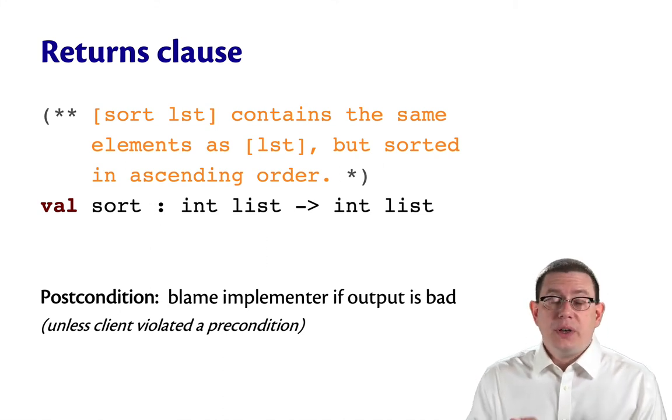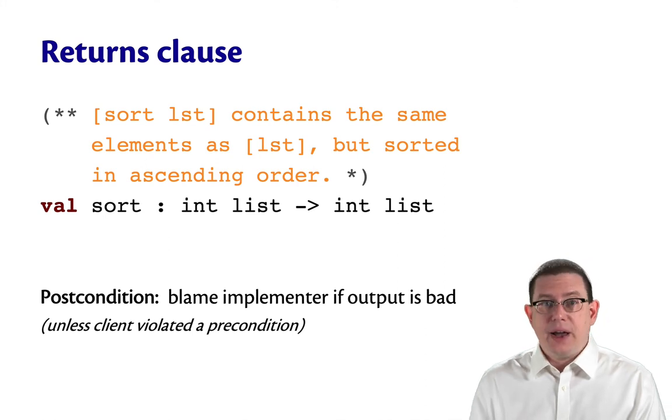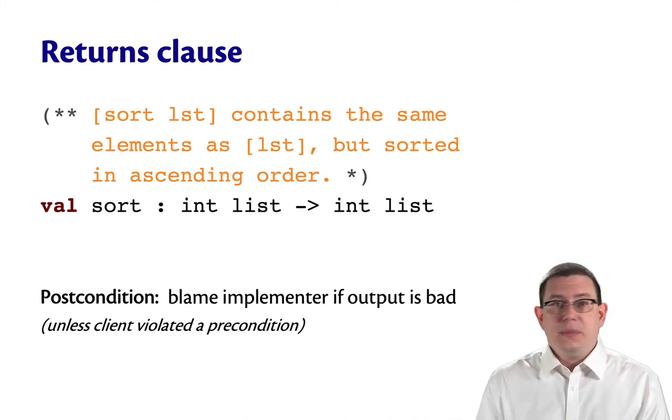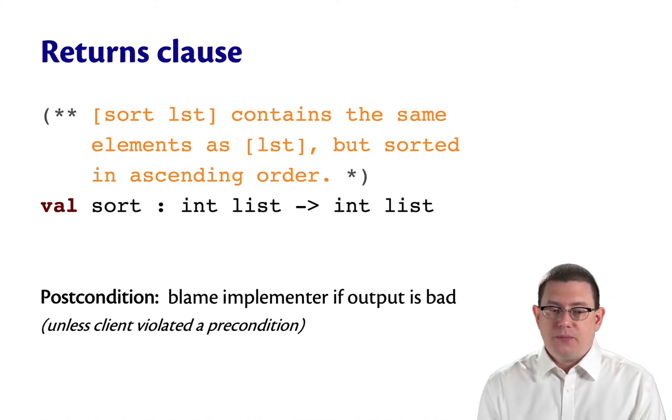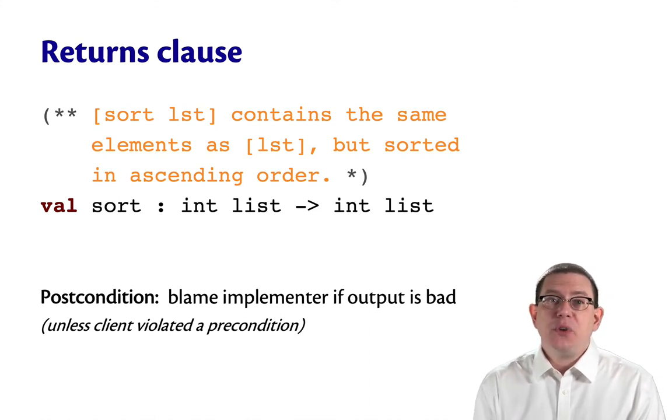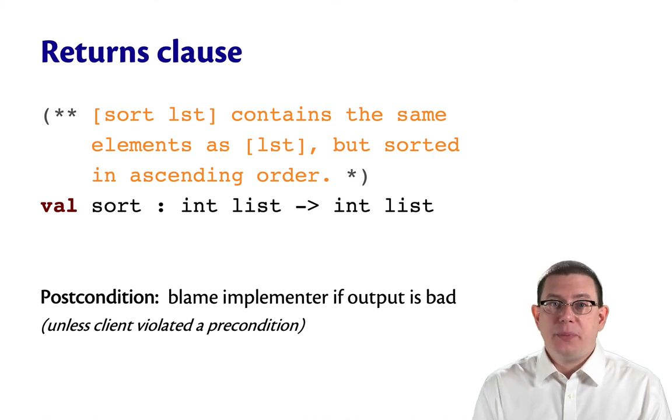Unless, of course, there had been a precondition and the client had violated the precondition. Say, with the standard library function, if the client passed in a bad compare function. But here there is no precondition, so it's all the implementer's job.